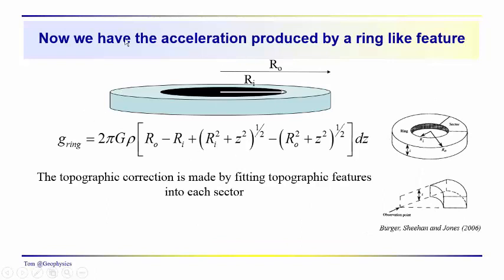So now we have the acceleration due to gravity produced by this ring-like feature. In order to get the acceleration due to gravity of a particular subdivision of this ring, we just divide the ring by however many sectors we have in the ring. So if we have eight sectors, then we take one-eighth of the acceleration here.